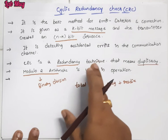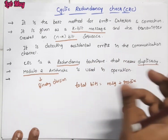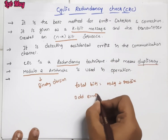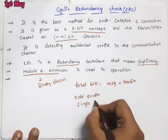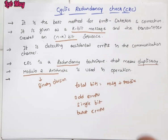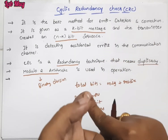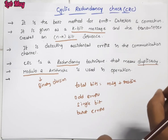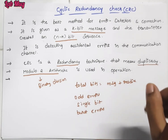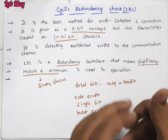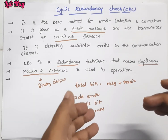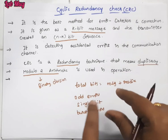By using cyclic redundancy, we can find errors easily. First, odd errors and single bit errors are easy to identify. Burst errors are also easy to find out. Now, the total techniques: first, only single bit errors can be identified; second, multiple single bit errors. By using the cyclic redundancy check, we can detect both types of errors easily — damaged errors and multiple errors.